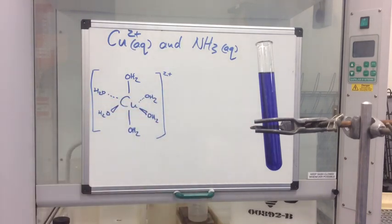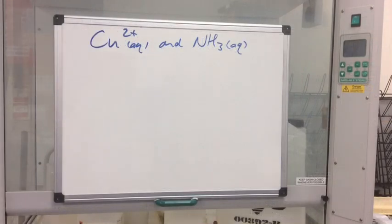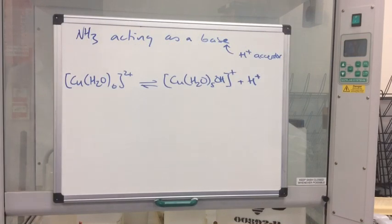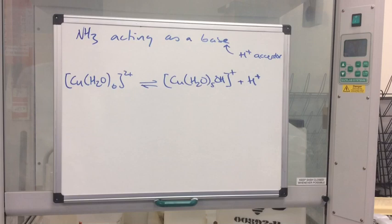So we've had two reactions essentially taking place. The reason we get two reactions is because ammonia is actually performing two different roles. Initially it's acting as a base, accepting a proton, and then when it's in excess it actually acts as a ligand. Note that explaining ammonia acting as a base requires going above the syllabus level, so it won't be tested on the exam, but it explains the two roles of ammonia.